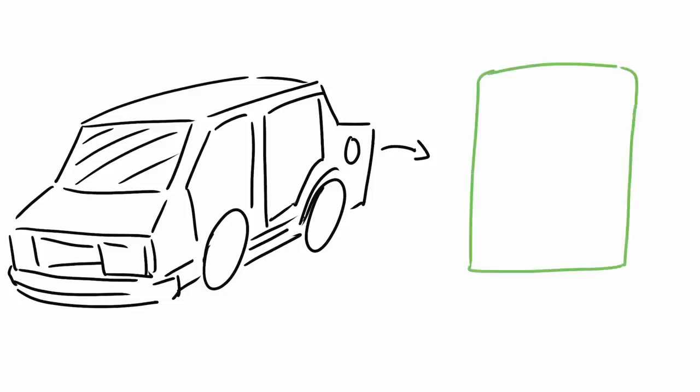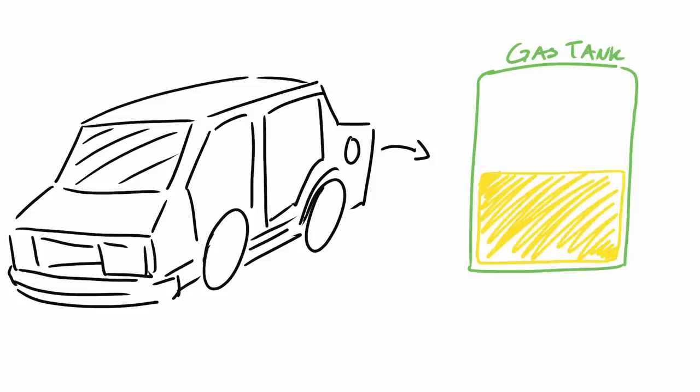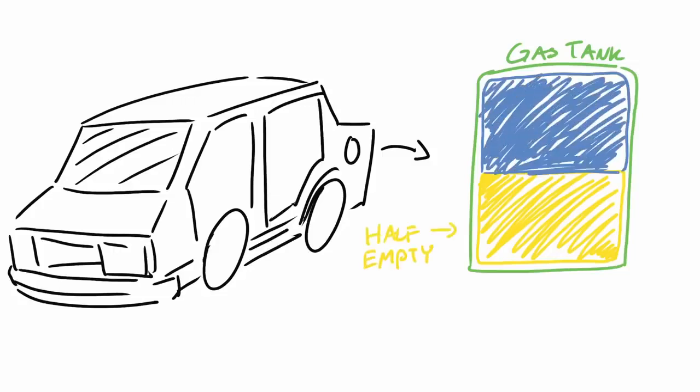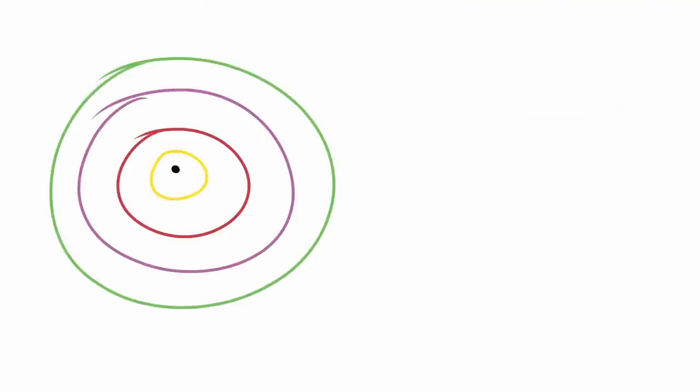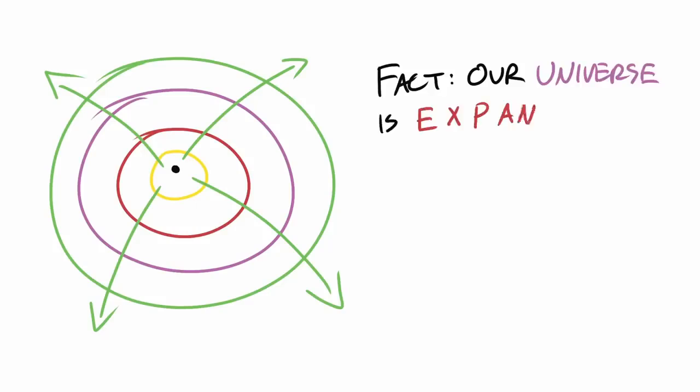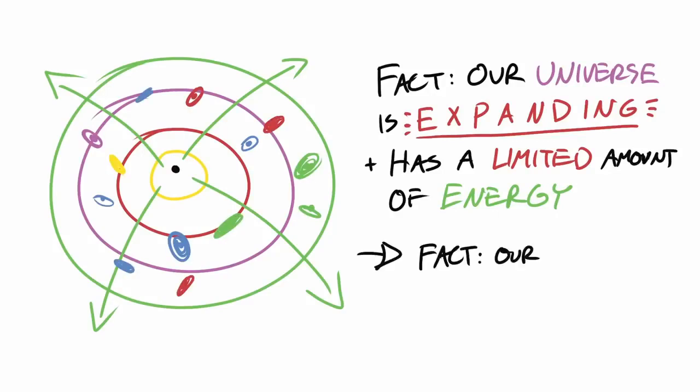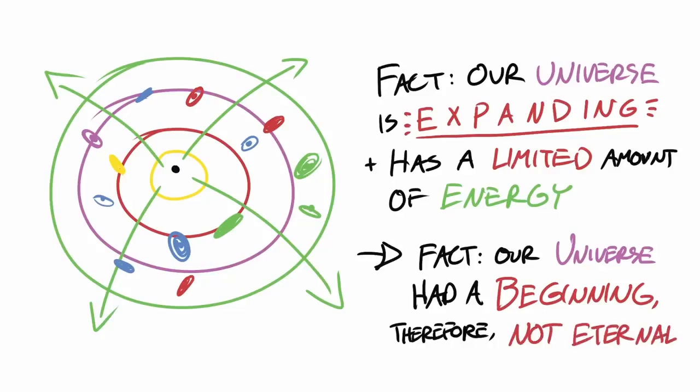In addition to that, think of the energy that's being used in the universe as a fuel tank to a car. If right now our fuel tank is half empty, then there needed to be a time in which the tank was actually full. All of that to say, the fact that our universe is expanding right now and has a limited amount of energy that's being used in our solar system and galaxies, all of this points us to the fact that our universe had a beginning and therefore could not be eternal.